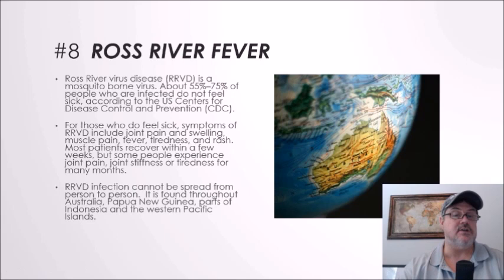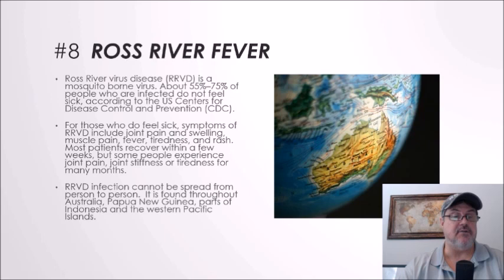Number eight: Ross River fever. Ross River virus disease is a mosquito-borne virus. About 55 to 75% of people who are infected do not feel sick. For those who do, symptoms include joint pain and swelling, muscle pain, fever, tiredness, and rash. Most patients recover within a few weeks, but some experience joint pain, stiffness, or tiredness for many months. Ross River virus cannot be spread from person to person. It is found throughout Australia, Papua New Guinea, parts of Indonesia, and the western Pacific Islands.